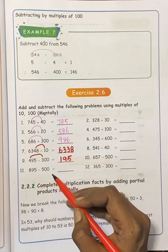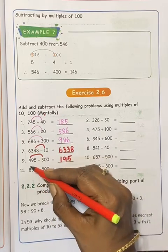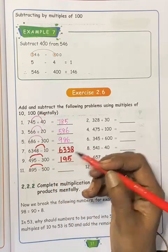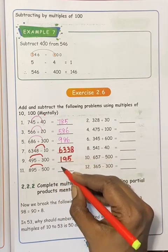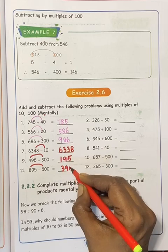895 minus 500. Then 100s place. 8 minus 5, 3. 95.